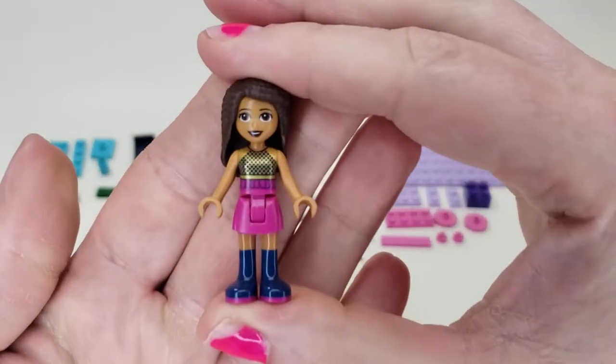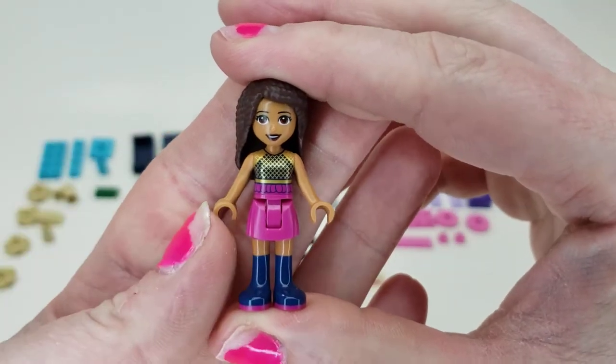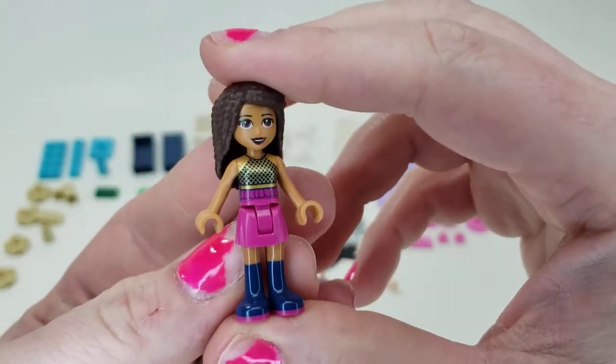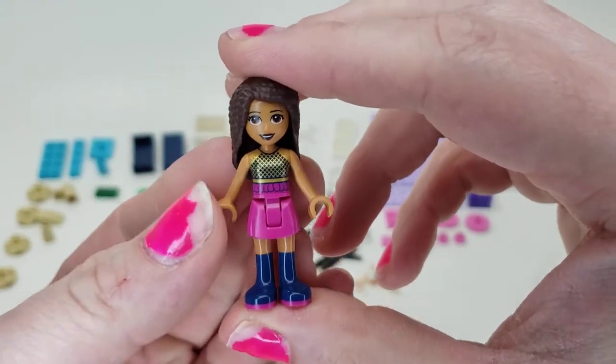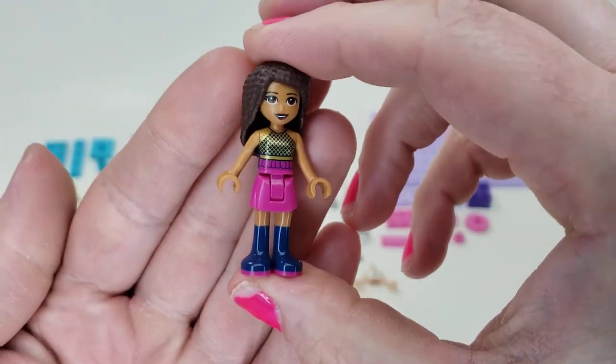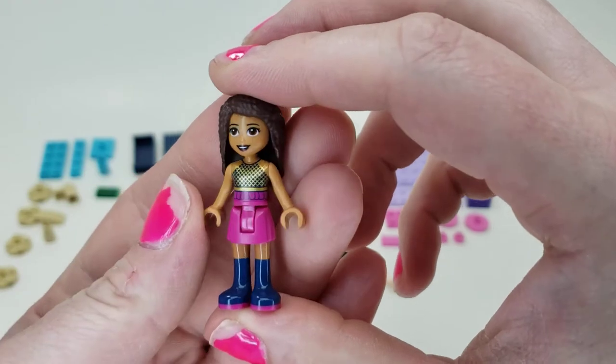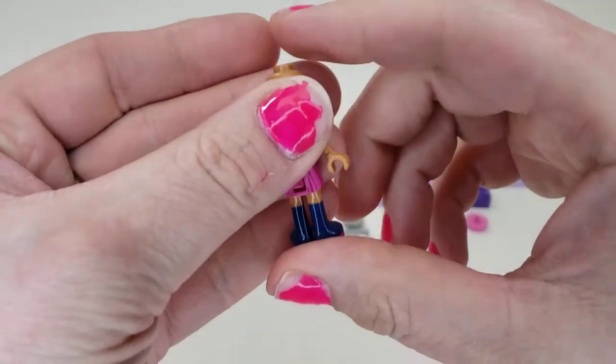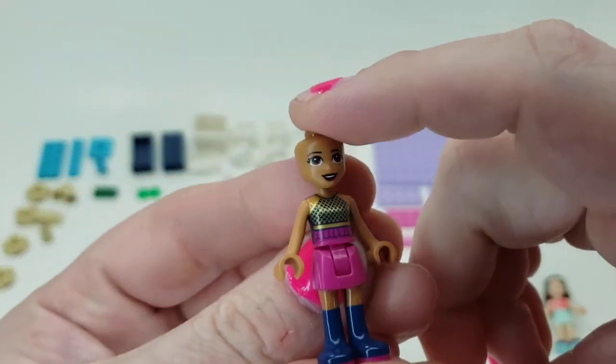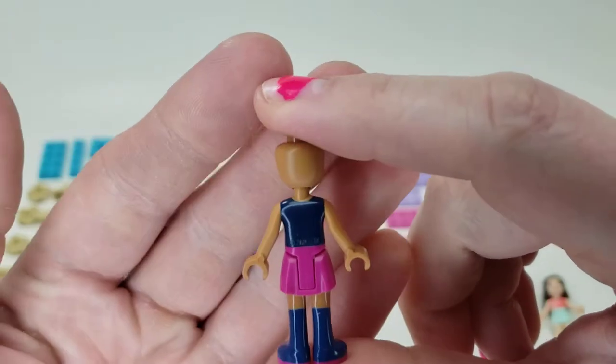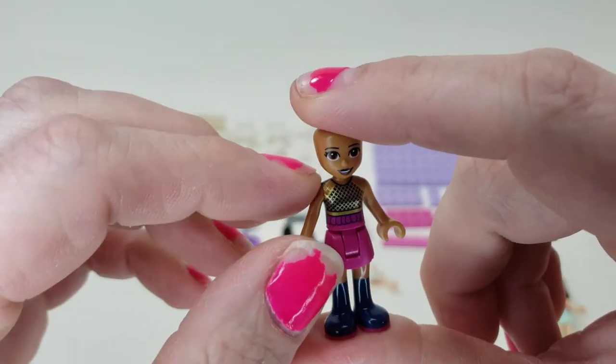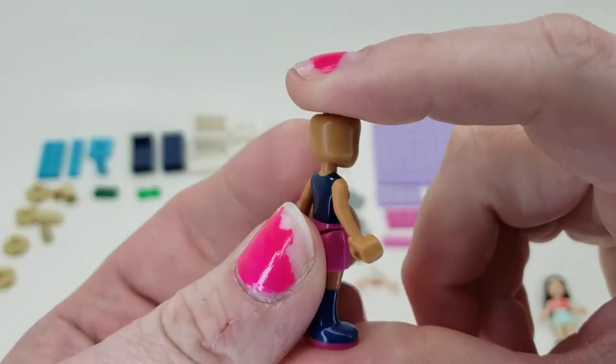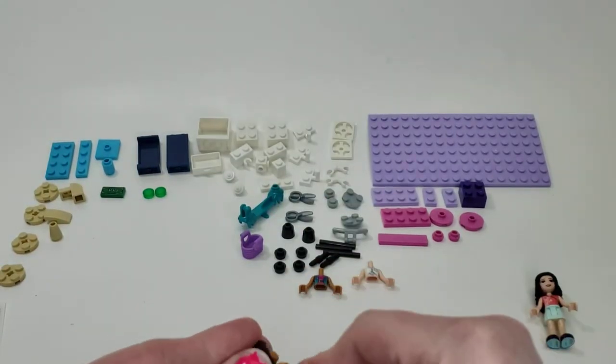And then we have Andrea. She's got her blue boots, love the pink sole there. Pink skirt and then she's got a nice kind of metallic top with pink. I really like that top. And got her same type of face that they always have, just kind of smiling. And the back doesn't really have any detail. I don't really like that because it should be more of a tank top type look which is kind of unfortunate there.